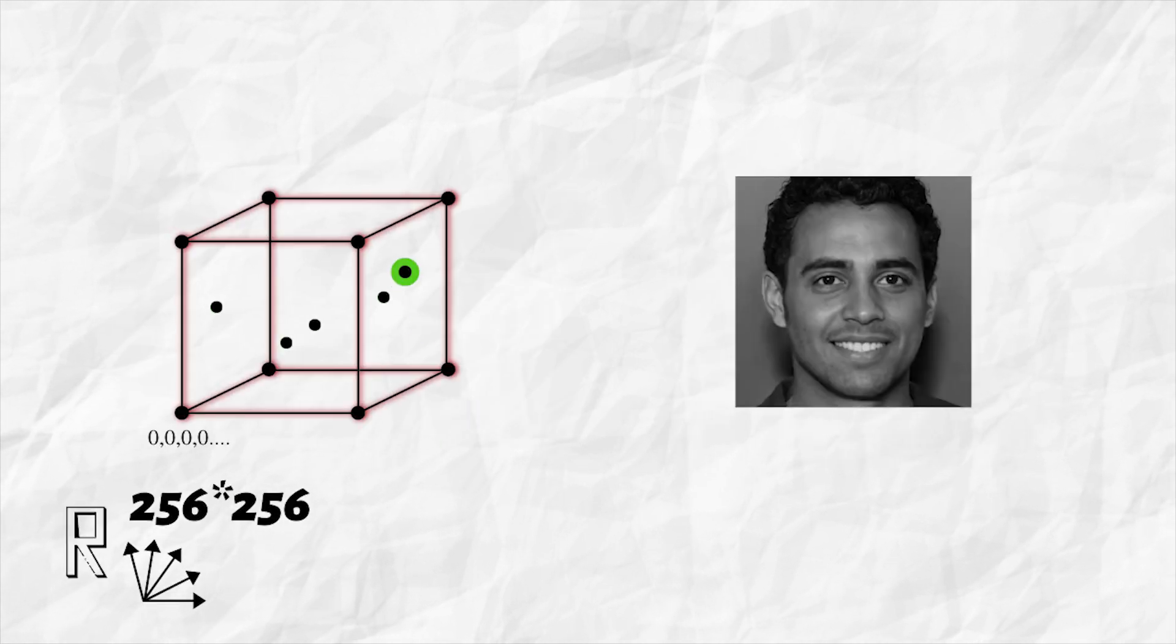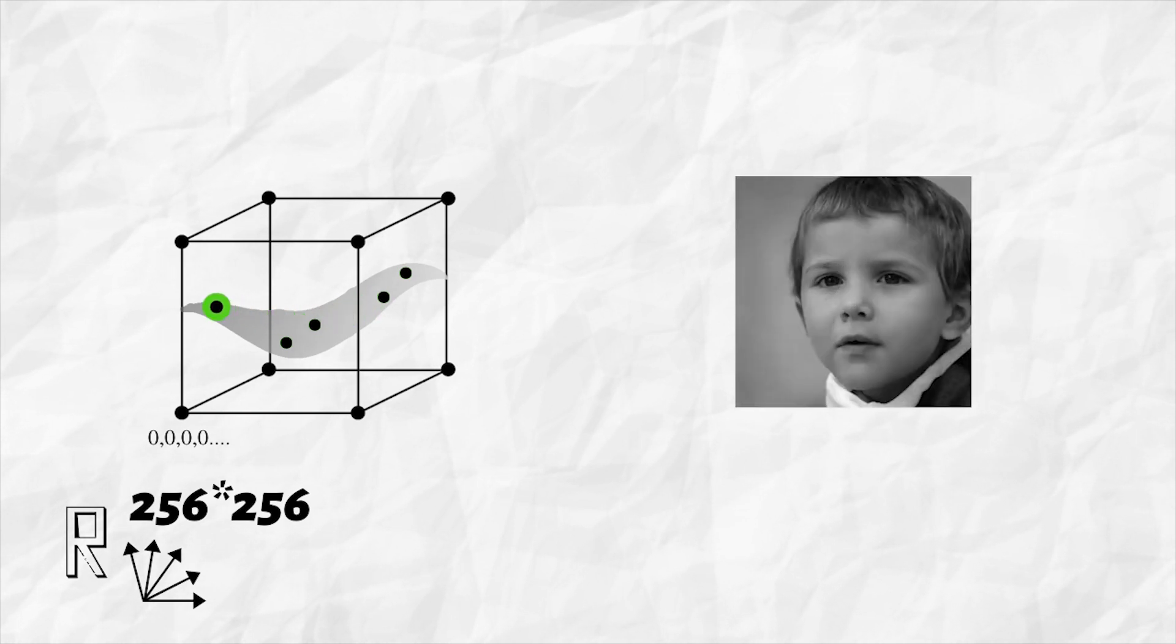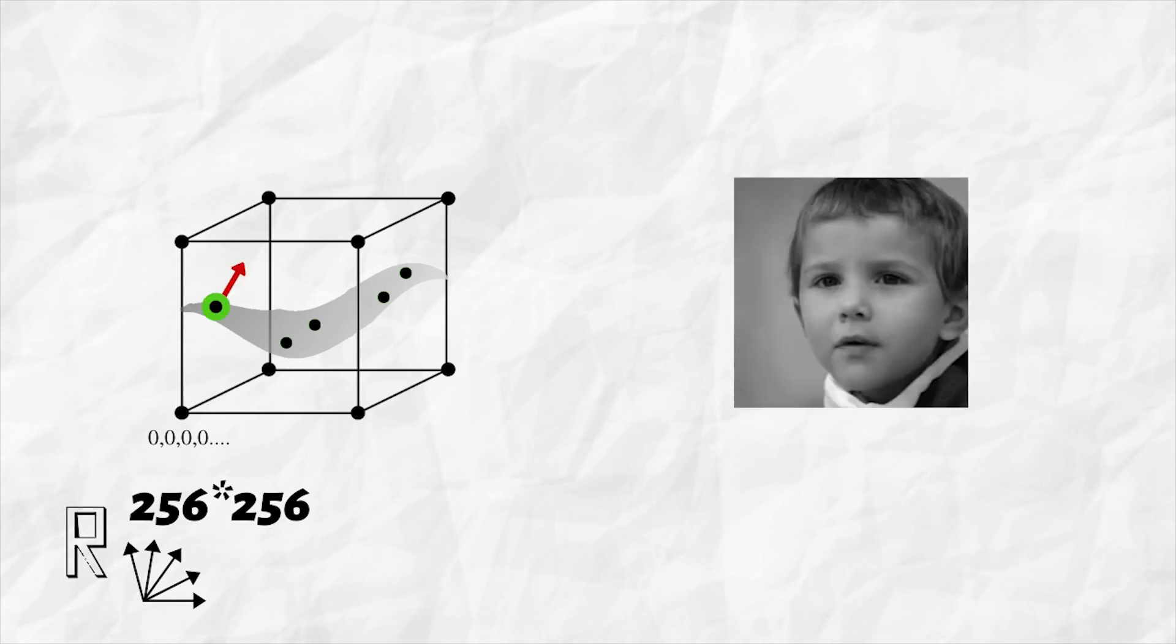In this high dimensional space, we actually have the freedom to go in any direction. But if we want to traverse only on the face manifold, our degrees of freedom are limited. Moving on the face manifold causes changes in the image. If we go off in a direction out of the manifold, we might find some freaky things which don't occur naturally. But mostly, we will find just noise.